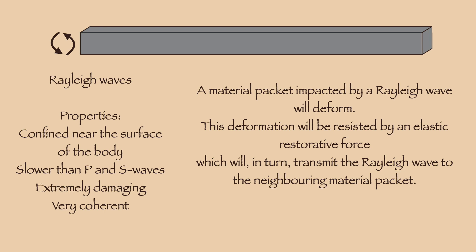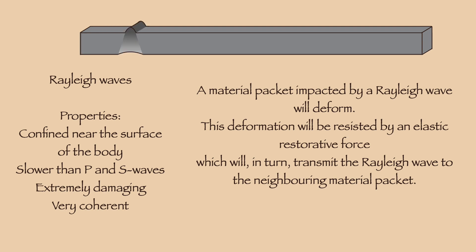These waves will also interact with later arriving waves. There are a couple of mechanisms by which the interplay between incoming and reflected waves can generate self-perpetuating stress cycles within the surface layer of the body. For Rally waves, this stress cycle involves compression near the surface of the body and extension inside the body, followed by extension of the surface and compression within. This process is perhaps best illustrated rather than explained. Every time a material packet is deformed, the elastic restorative force counteracts that deformation and overcorrects, impacting the neighboring material packet.